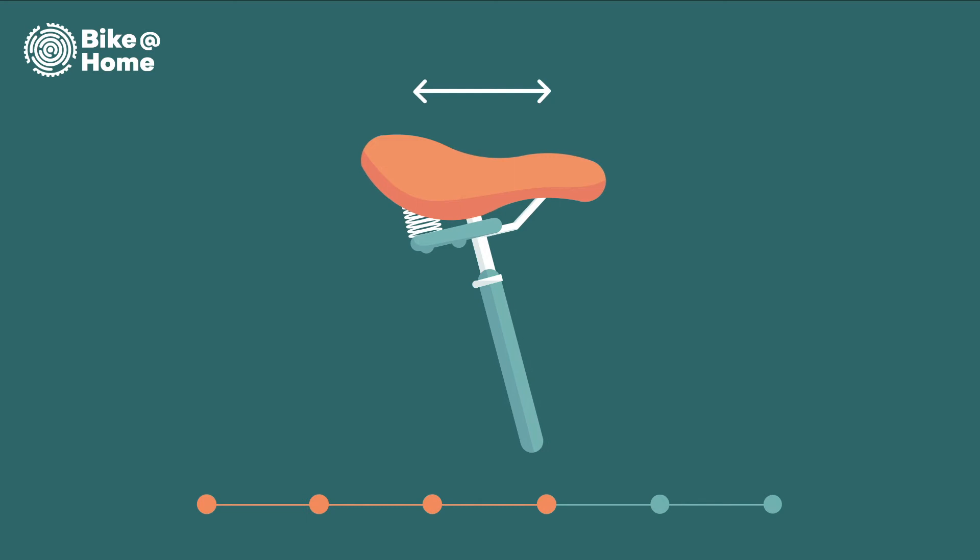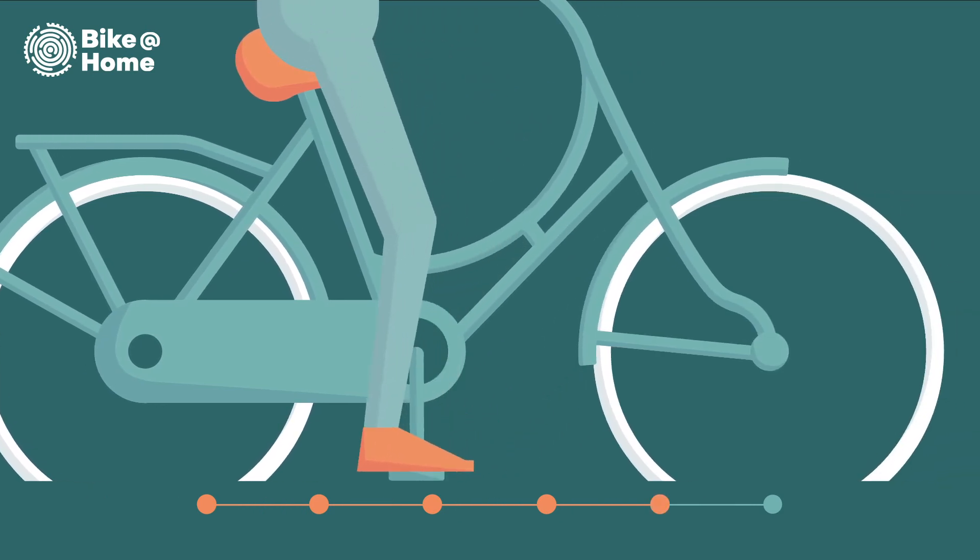Check whether you need to adjust the fore-aft position, or saddle setback. Place your saddle horizontally and make sure that your foot is below your knee when pedaling.